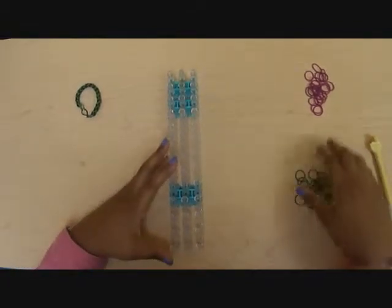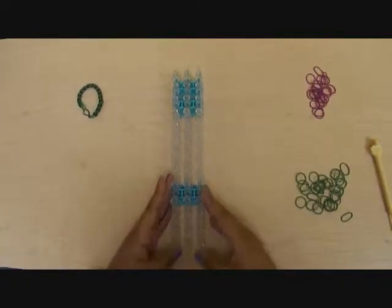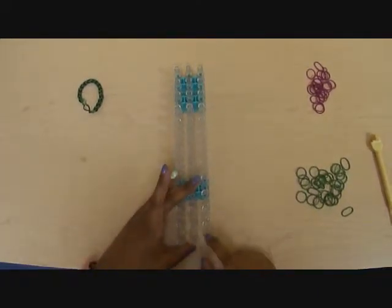I'm going to use dark green and this pink color, and your loom is going to be set up with all three straight rows at the bottom.